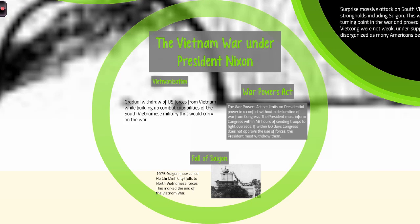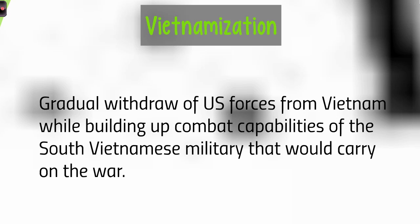Under President Nixon, who becomes president in 1969, he champions several policies in the Vietnam War. The first is what we call Vietnamization — the idea of U.S. forces gradually leaving Vietnam while building up the South Vietnamese military to take over policing instead of us. This is the same type of situation we had in Iraq when we started pulling out forces and giving more control to the Iraqi army — a strategy that has been used since Vietnam.